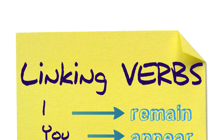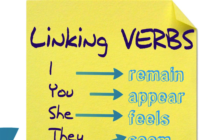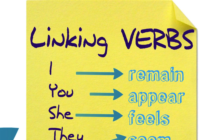Another specific type of verb is the linking verb. They are another form of non-action verb that are often associated with feelings and appearance. For example: I remain, you appear, she feels, they seem. Remain, appear, feel, and seem are all non-action linking verbs.